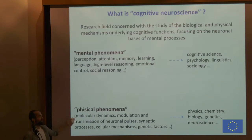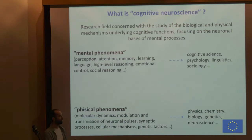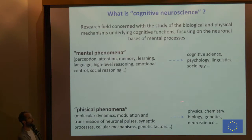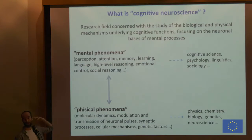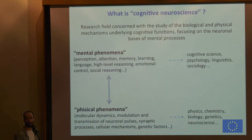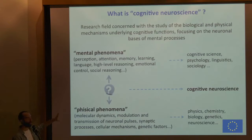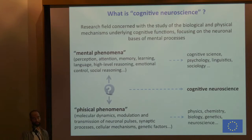On the other side of the bridge we have physical phenomena: molecules, atoms, transmission of synaptic pulses into neurons, synaptic processes, which are very complicated biochemical processes — cells, genes — all these physical things usually studied by physics, chemistry, biology, and neuroscience. There's a gap: how can abstract mental things studied by psychologists be related to physical things? Cognitive neuroscience tries to make a bridge between the physical phenomena and the mental abstract phenomena.